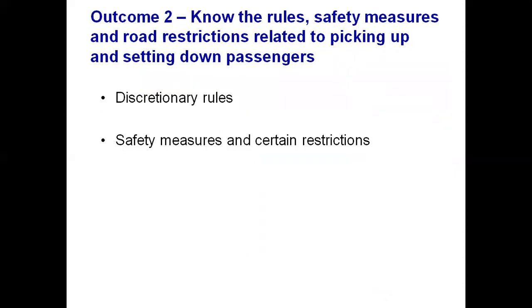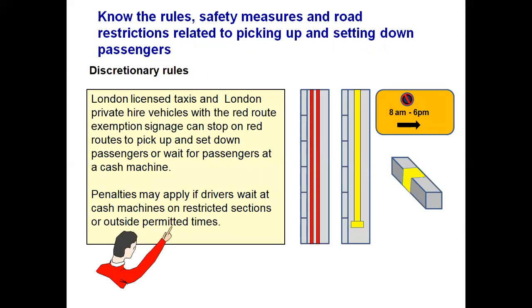Outcome 2: Know the rules, safety measures and road restrictions related to picking up and setting down passengers. London licensed taxis and private hire vehicles with the Red Route exemption sign can stop on the Red Route to pick up and set down passengers, or wait for passengers getting cash from an ATM. This is for PCO registered drivers only — an out-of-town driver cannot stop on a Red Route. A Red Route means a through route with no stopping.